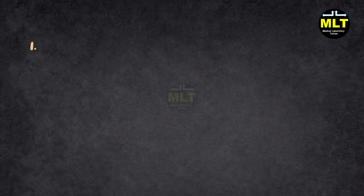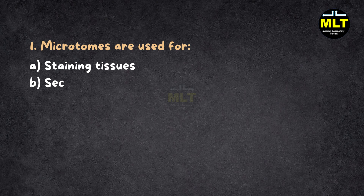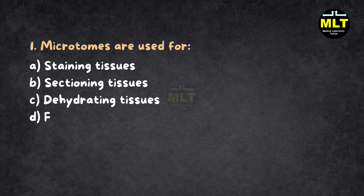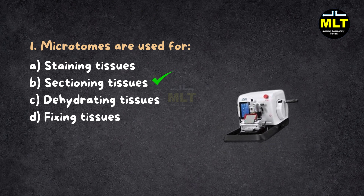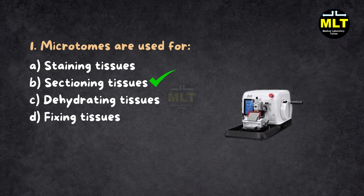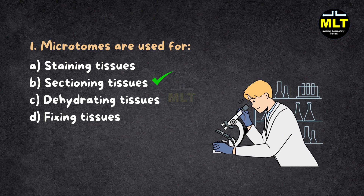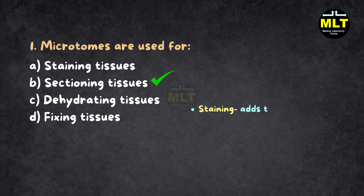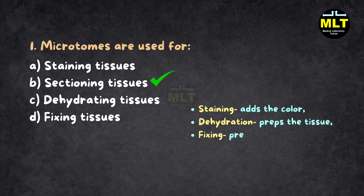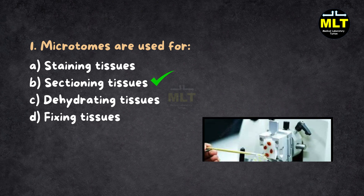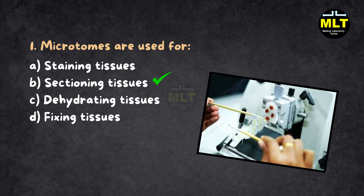Question 1: Microtomes are used for — Options: A. Staining tissues, B. Sectioning tissues, C. Dehydrating tissues, D. Fixing tissues. Correct answer: B. Sectioning tissues. Explanation: Microtomes are like precision slicers, cutting tissue sections as thin as paper for microscopic examination. Staining adds the color, dehydration preps the tissue, and fixing preserves it. But sectioning is where the magic of detailed analysis begins.